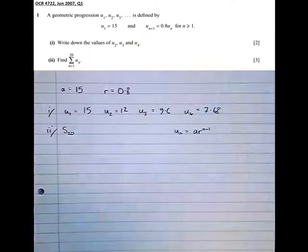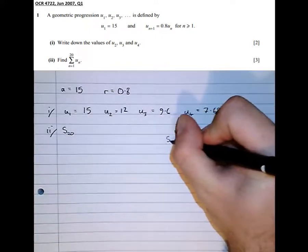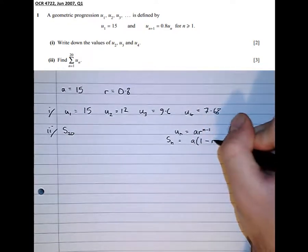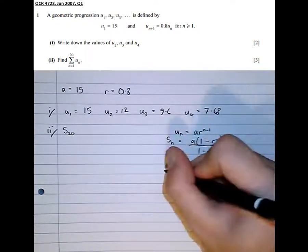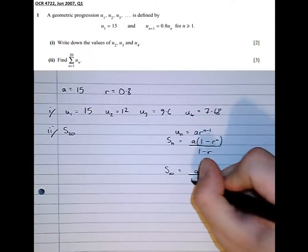It tells us that the nth term is obtained by a times r to the (n minus 1). It tells us the sum of the first n terms is a(1 minus r to the n) over (1 minus r). And it also tells us the sum of an infinite number of terms is a over (1 minus r).